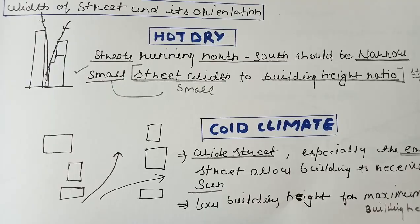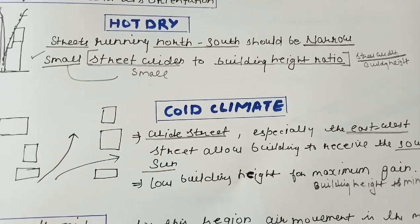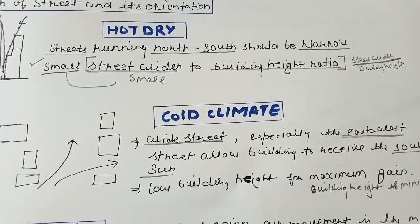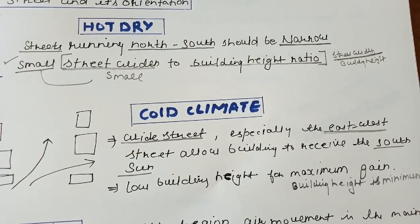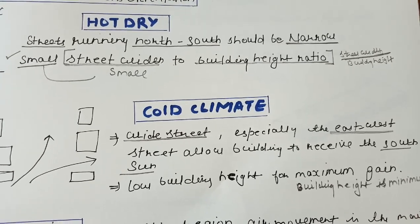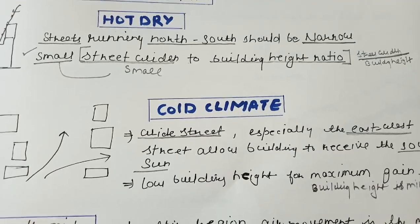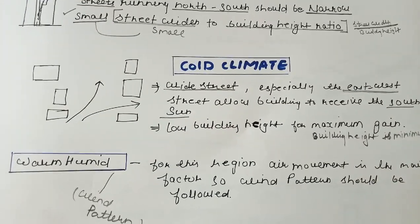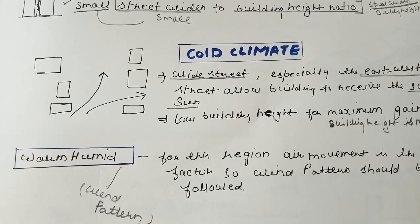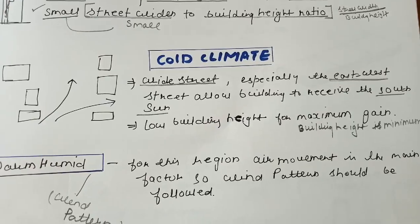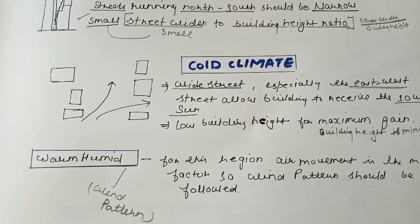In hot dry climates we avoid wide streets for radiation purposes. In cold climates, we follow wide streets, especially east-west oriented ones, to gain solar gain, allowing buildings to receive the south sun. Low building height matters here, as it maximizes solar gain. For warm humid climates, air movement is the main factor, so we focus on wind patterns and provide measures for natural ventilation.